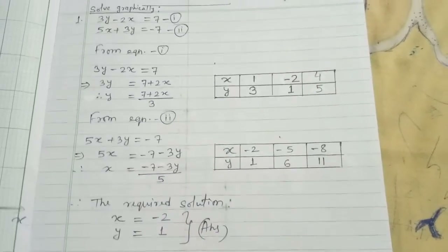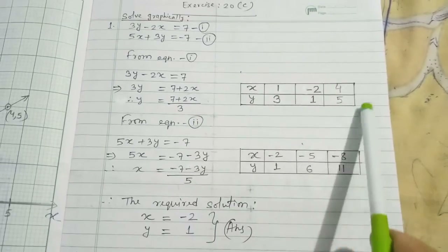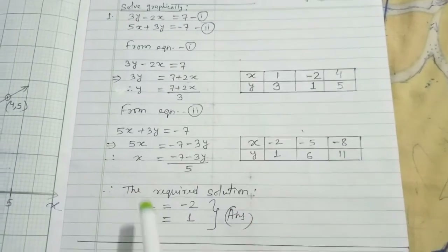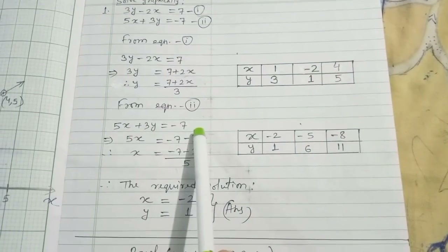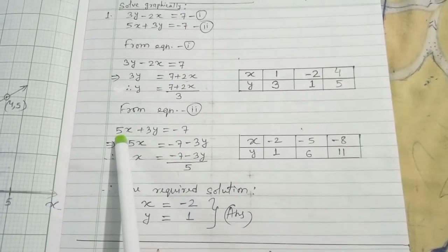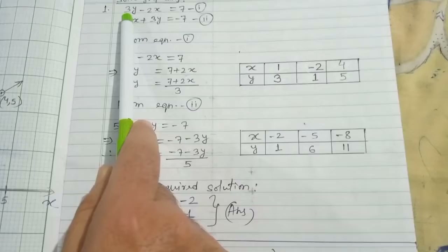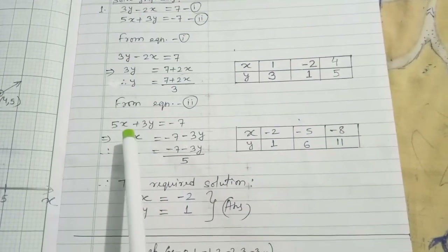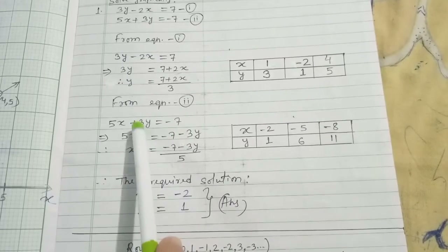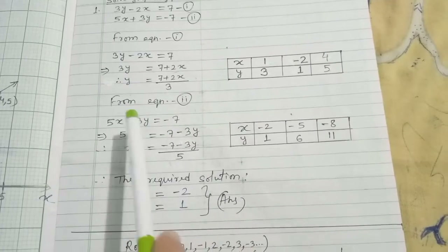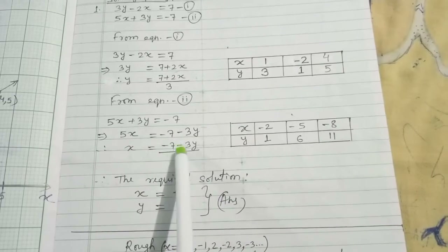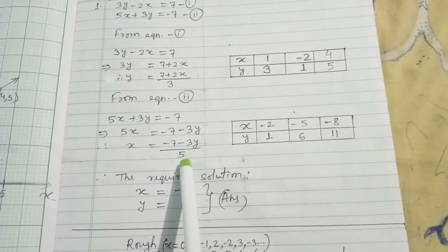Now for Equation 2: 5x plus 3y equal to minus 7. Here I will make x alone since x is in positive form. Rearranging: 5x = minus 7 minus 3y, so x = (minus 7 minus 3y) / 5.